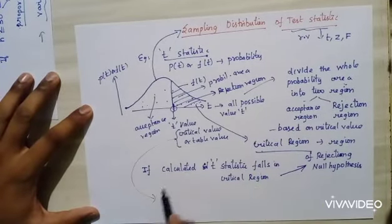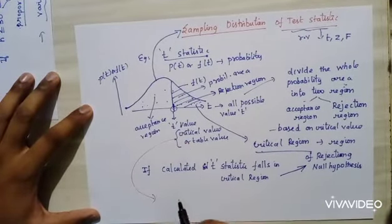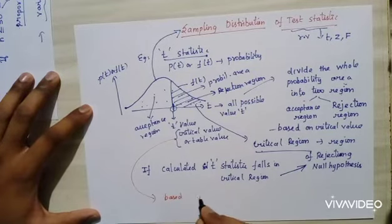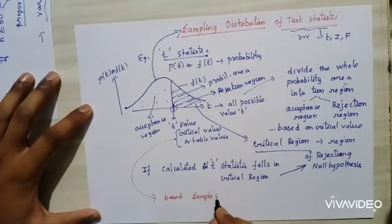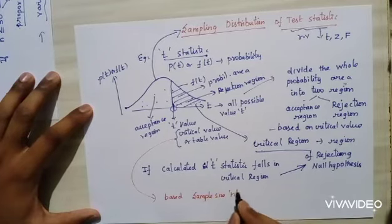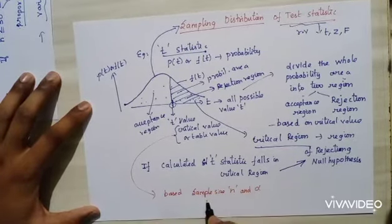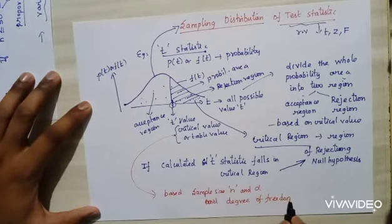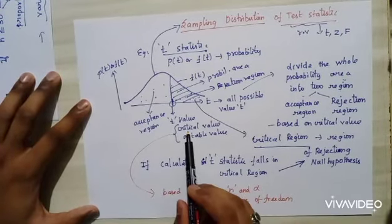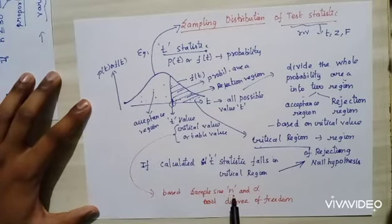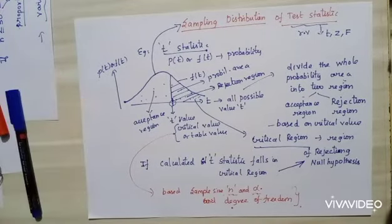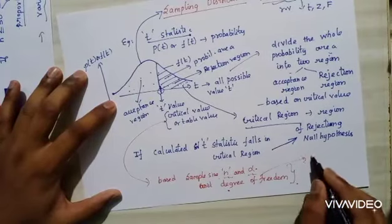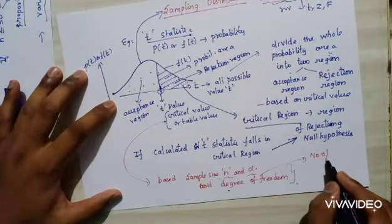This critical value is based on sample size n, alpha (level of significance), and degree of freedom. The table value will be determined by these three parameters.